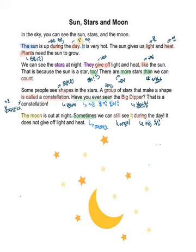Have you ever seen the big dipper? 너 북두칠성을 본 적이 있니? That is a constellation. So 북두칠성, the big dipper is a constellation.